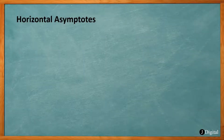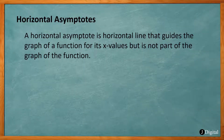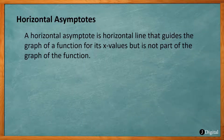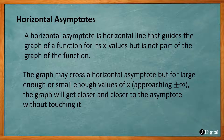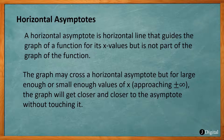Now let's take a look at horizontal asymptotes. A horizontal asymptote is a horizontal line that guides the graph of a function for its x values, but it's not part of the graph. The graph may cross a horizontal asymptote, but for large enough or small enough values of x approaching plus or minus infinity, the graph will get closer and closer to the asymptote without touching it.